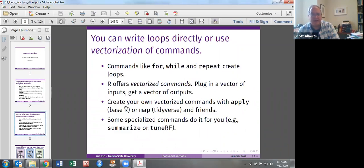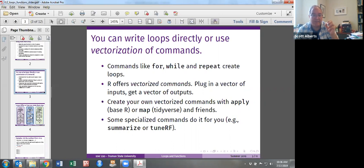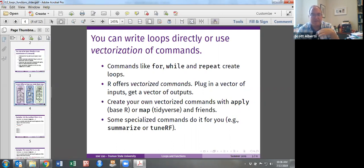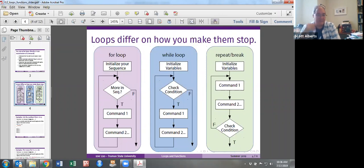We have these true loop commands that we're going to talk about, but then we're going to do vectorized commands or use apply and map to create vectorized commands. And there are some commands that do it for you and summarize is the one we've talked about a lot. Let's talk about for, while, and repeat. If you're in any kind of computer science or coding class at all, learning the three kinds of loops is one of the things that they'll spend a fair bit of time on. The difference is how loops stop.